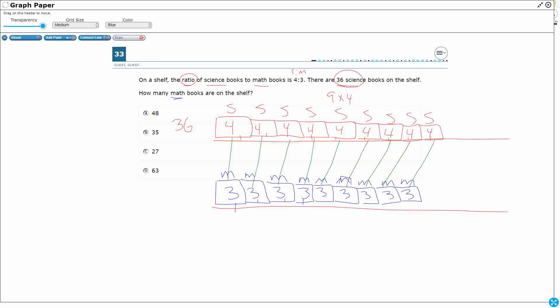3, 6, 9, 12, 15, 18, 21, 24, 27. Because I've got 9 sets of 3, that's going to get me 27 math books.